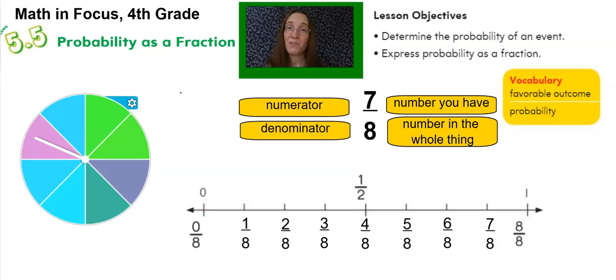So here's how we might use fractions along with probability. On my fraction number line down here, you can see that it starts with zero-eighths, which would be equal to zero, and eight-eighths, which is equal to one. Here I have a spinner that has eight sections. If what you wanted was to land on a spinner that was light blue, how many pieces represent a favorable outcome for you?